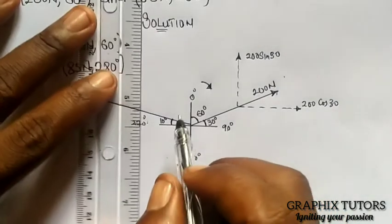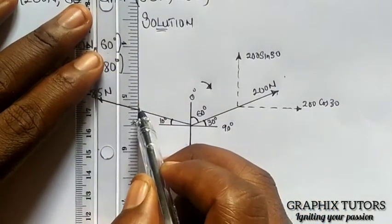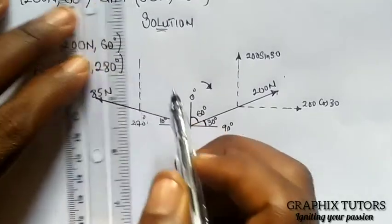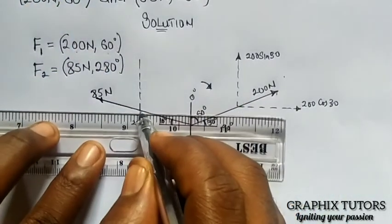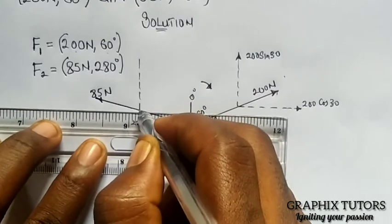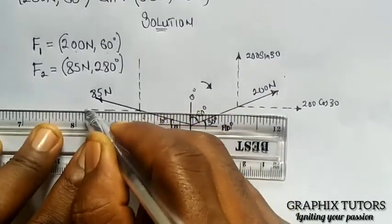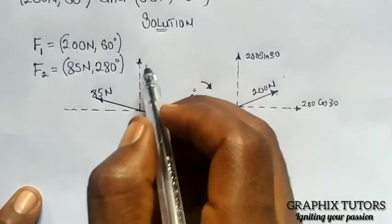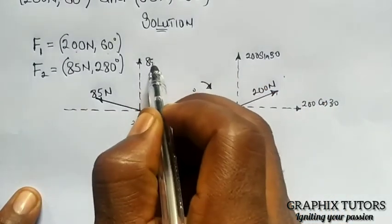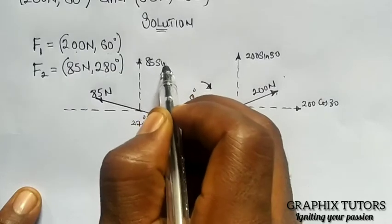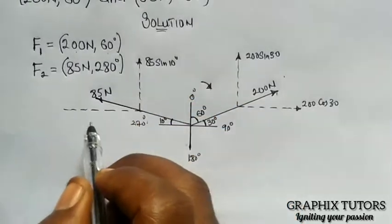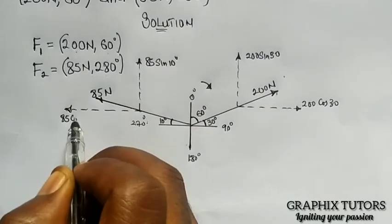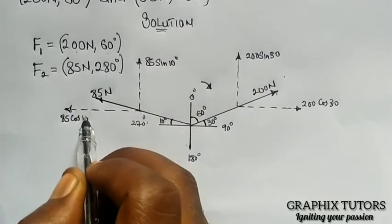Now it is inclined, I'll have to resolve it. So resolving it, this will be 85 sine 10 degree. And here will be 85 cos 10 degree.